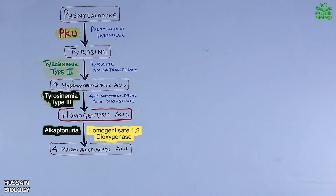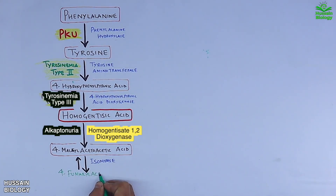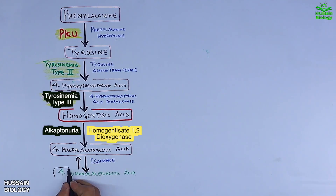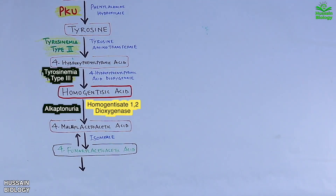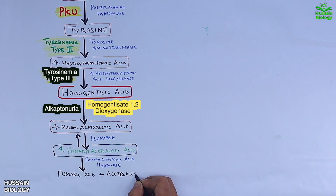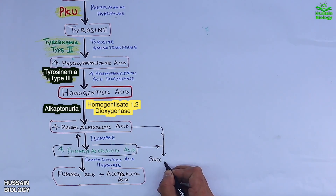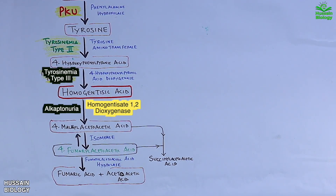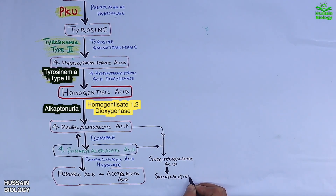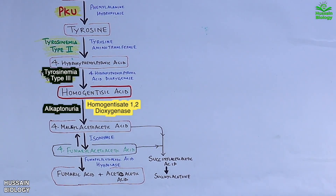If all enzymes are working properly, 4-maleylacetoacetic acid is converted to 4-fumarylacetoacetic acid by isomerase enzyme, then further converted to fumaric acid and acetoacetic acid by hydrolase enzyme. We also see a branching of this pathway where 4-maleylacetoacetic acid and 4-fumarylacetoacetic acid give succinylacetoacetic acid, which is later converted to succinylacetoacetate. This is the complete metabolism of phenylalanine.